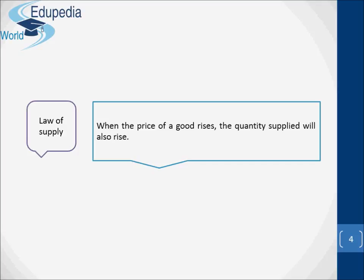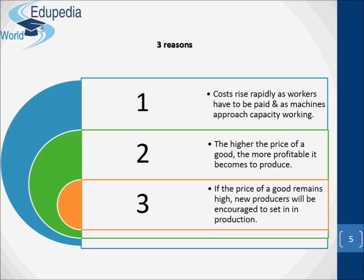This illustrates the general relationship between supply and price. When the price of a good rises, the quantity supplied will also rise. There are three reasons for this. As firms supply more, they are likely to find that beyond a certain level of output, costs rise more and more rapidly. In the case of the farm, if more and more potatoes are grown, then land progressively less suitable to potato cultivation has to be used.